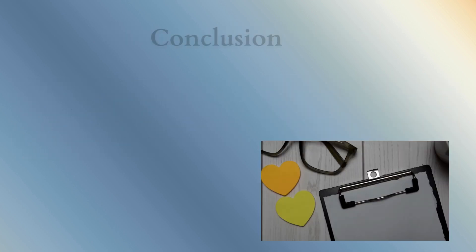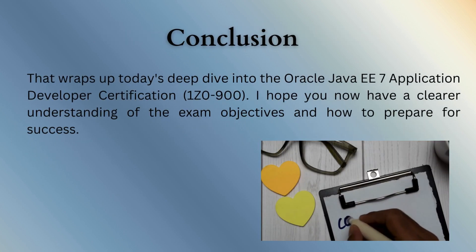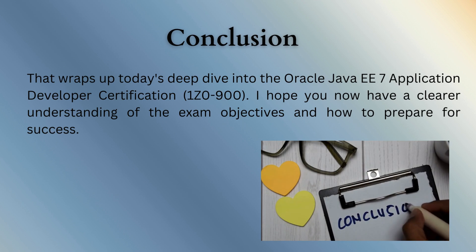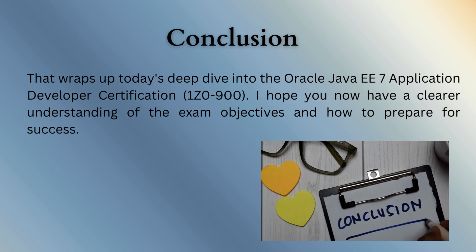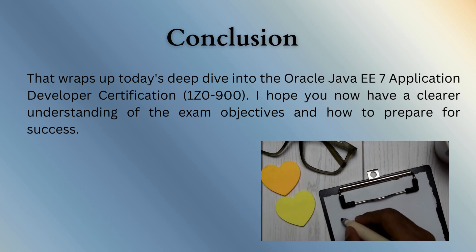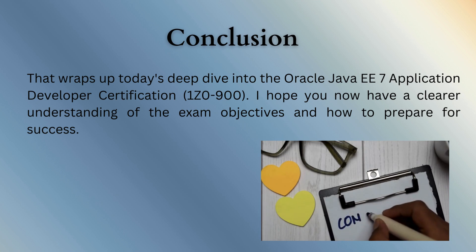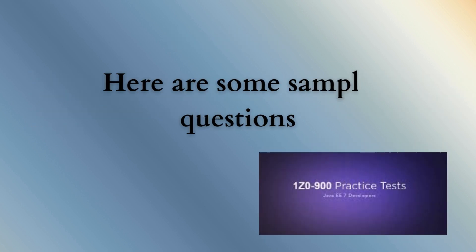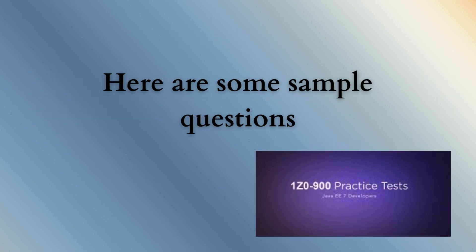That wraps up today's deep dive into the Oracle Java EE-7 Application Developer Certification, 1Z0-900. I hope you now have a clearer understanding of the exam objectives and how to prepare for success. Here are some sample questions.